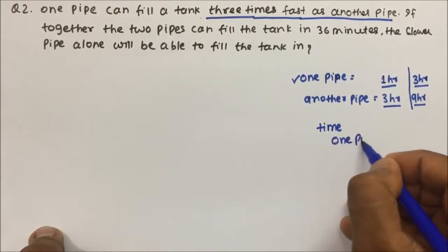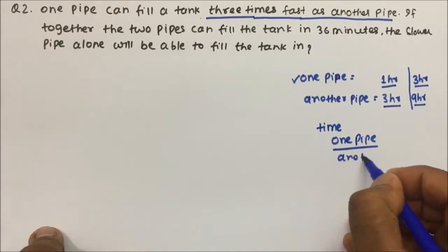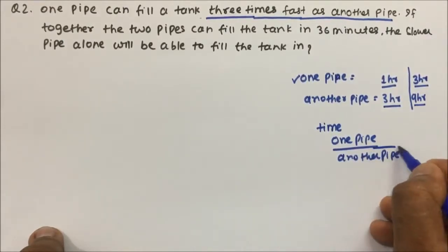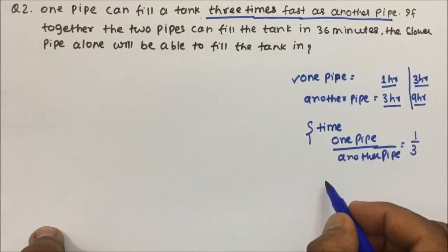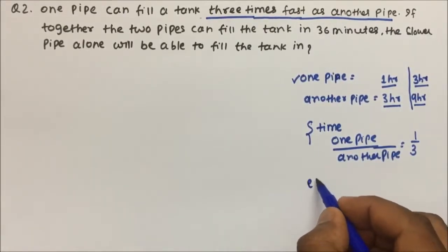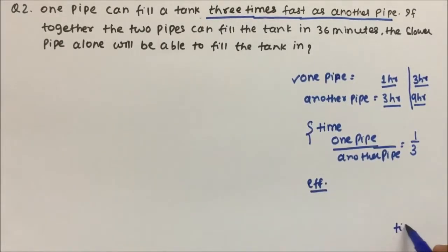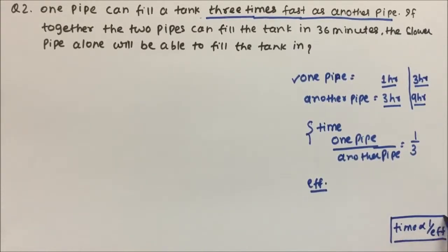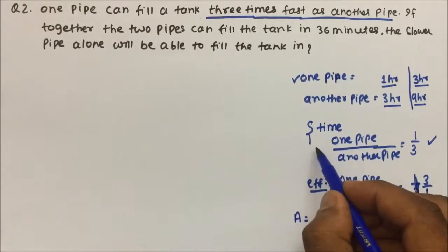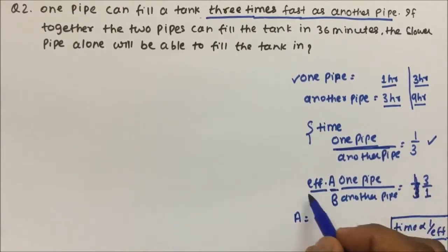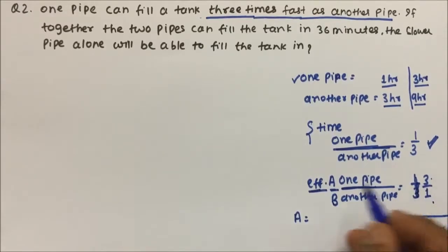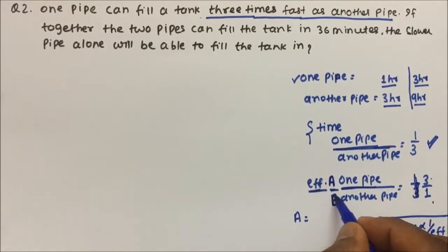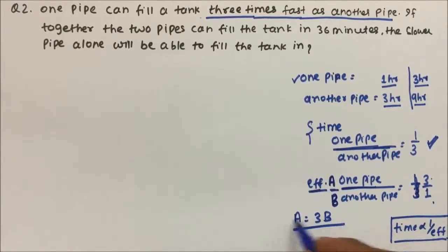Time ratio of one pipe to another pipe is 1:3. But for solving pipe and cistern questions we need efficiency, and we know time is inversely proportional to efficiency. So when we convert the time ratio 1:3 into efficiency ratio, it becomes 3:1. Calling one pipe A and the other B, we get A = 3B in terms of efficiency.